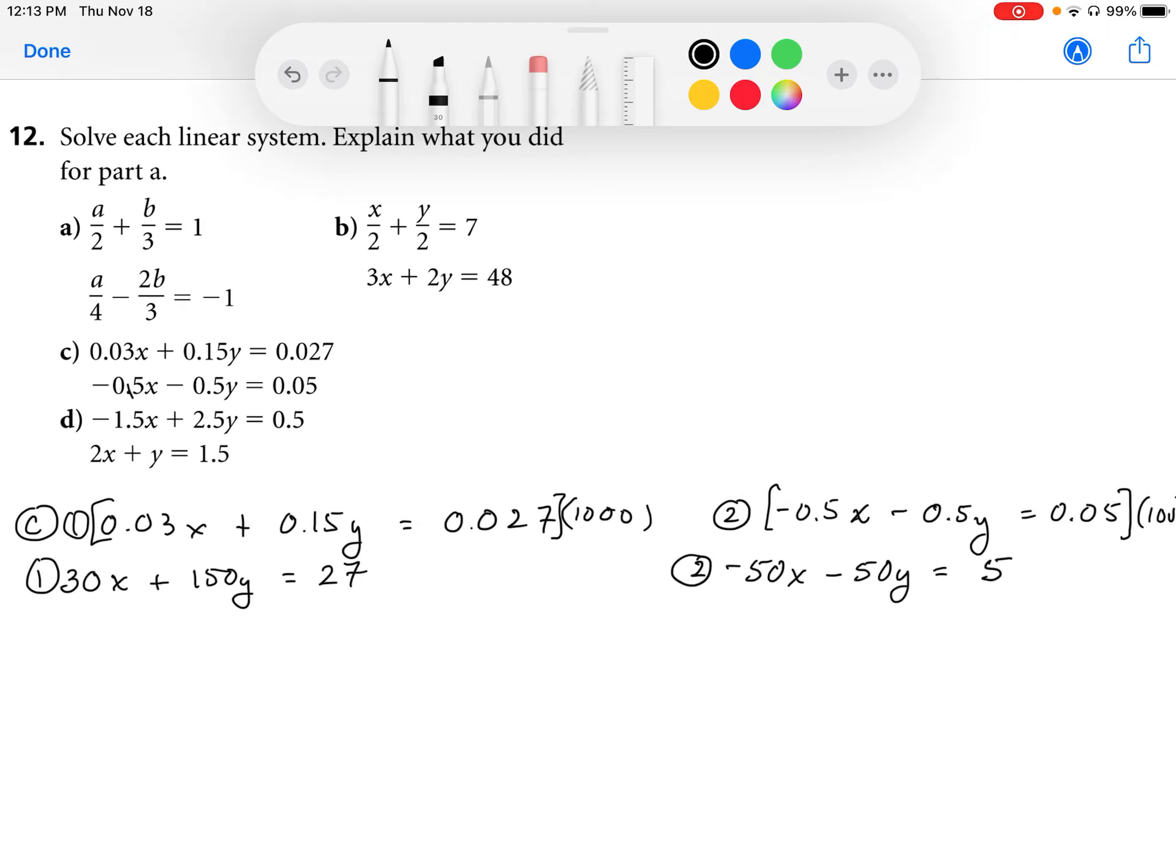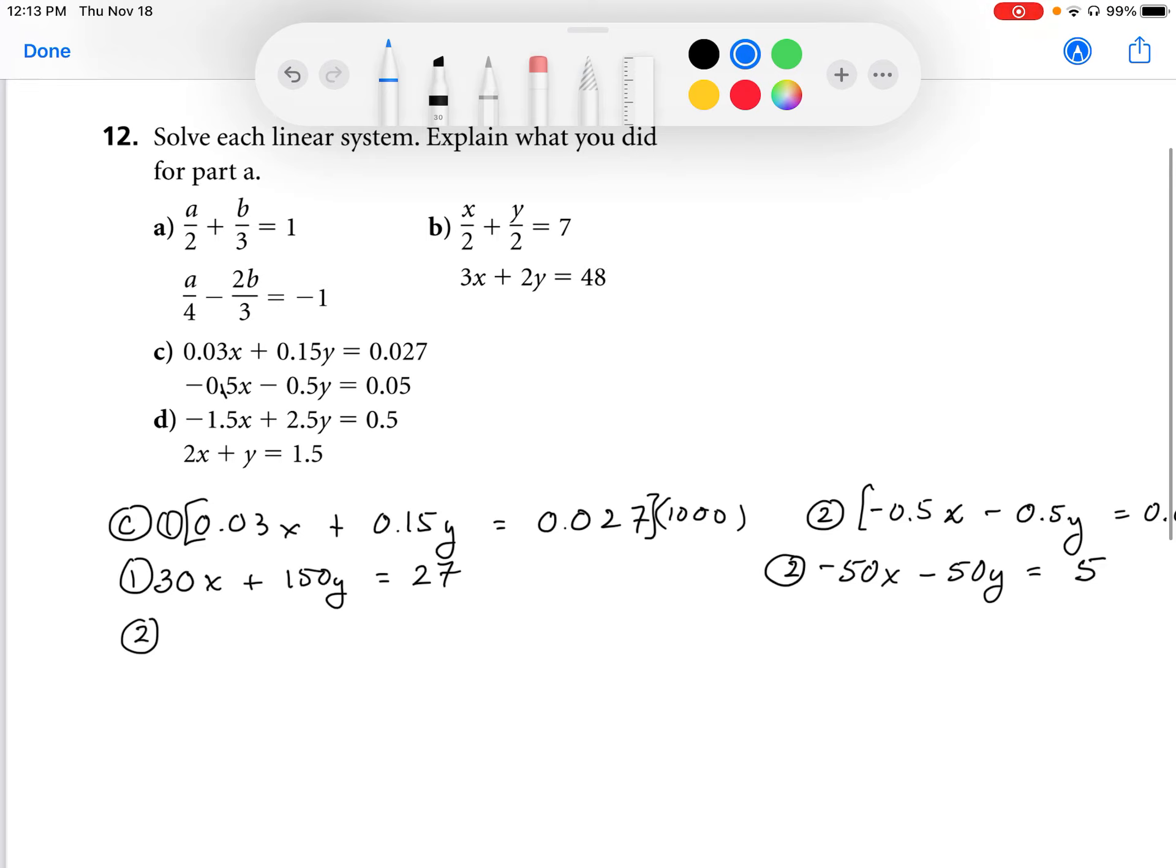Now, the easiest way to match my coefficients is I'm going to multiply equation 2 by 3. So I'm going to multiply that by 3. And when I do that, the coefficients end up being negative 150x, negative 150y, and that's equal to positive 15.